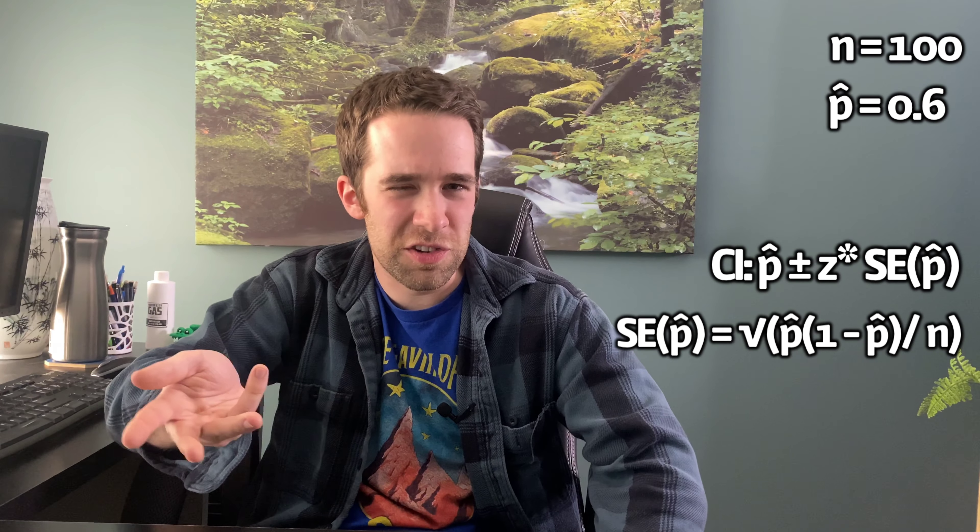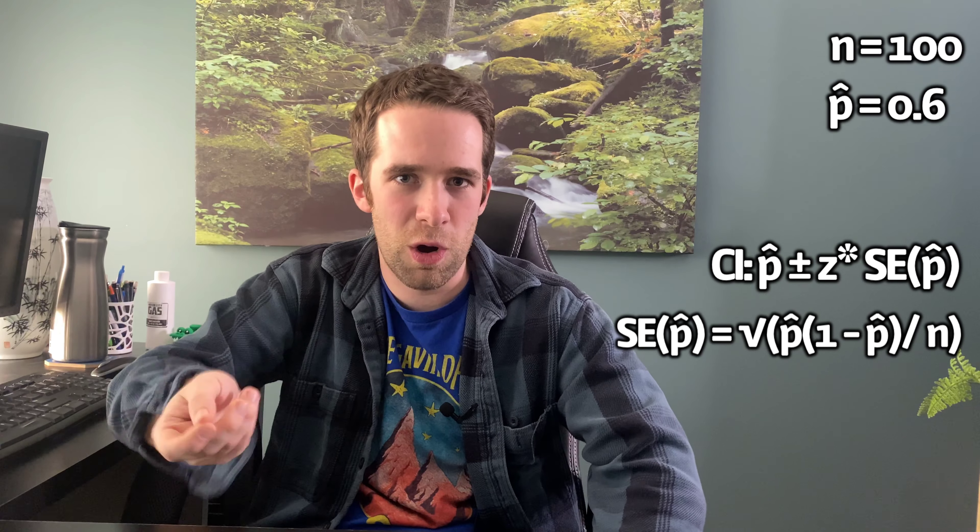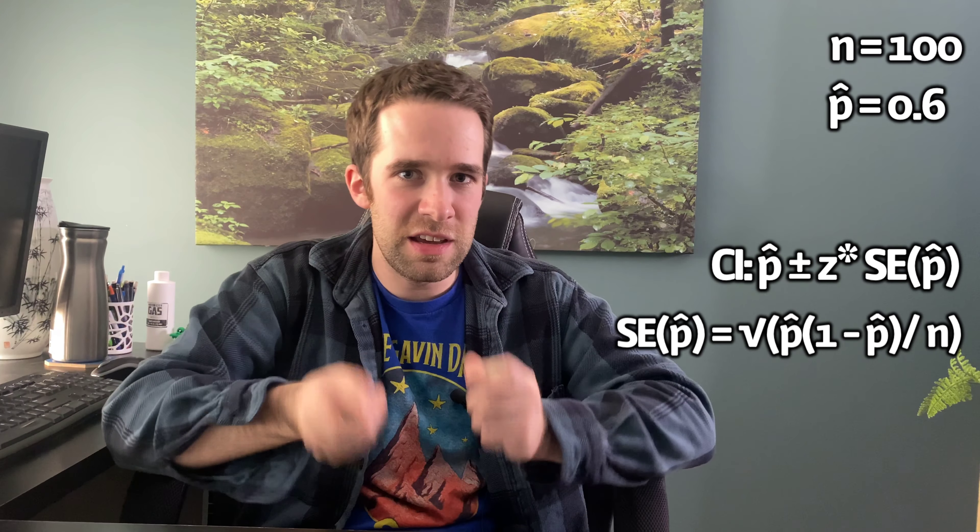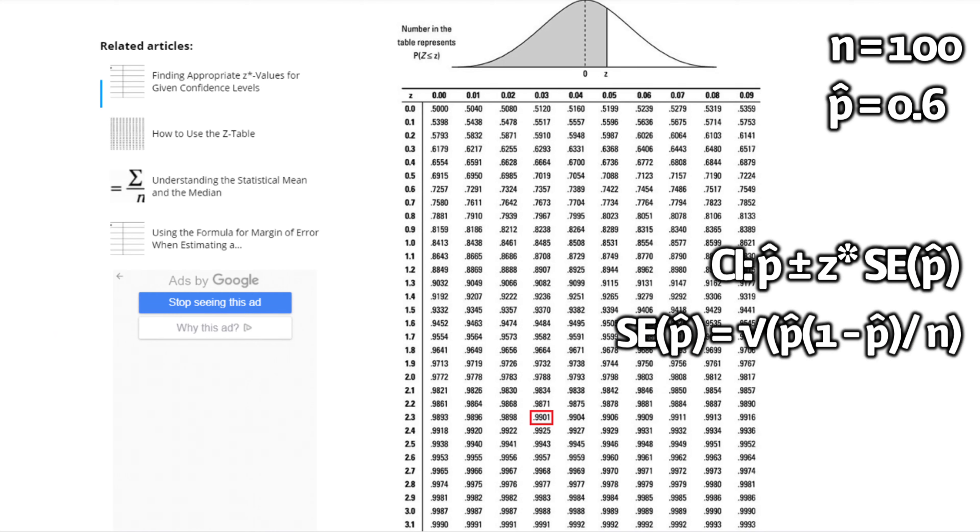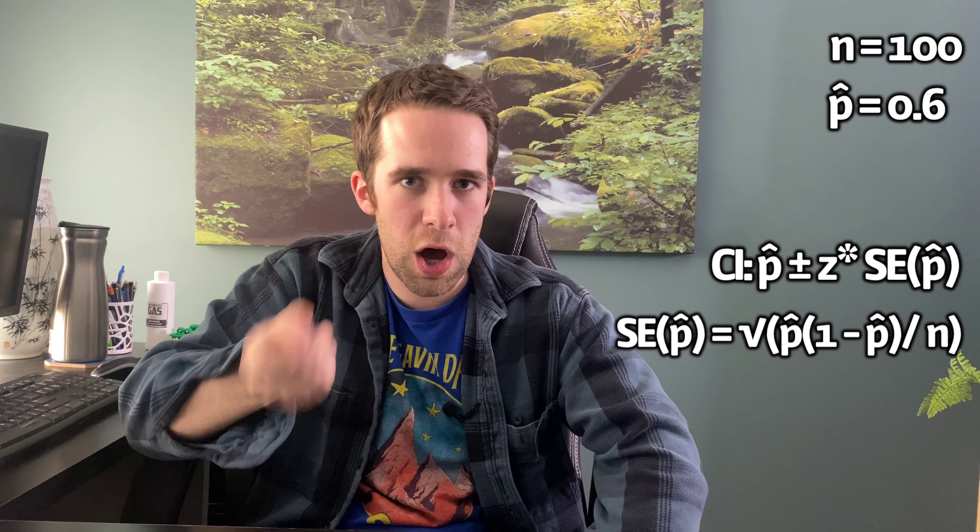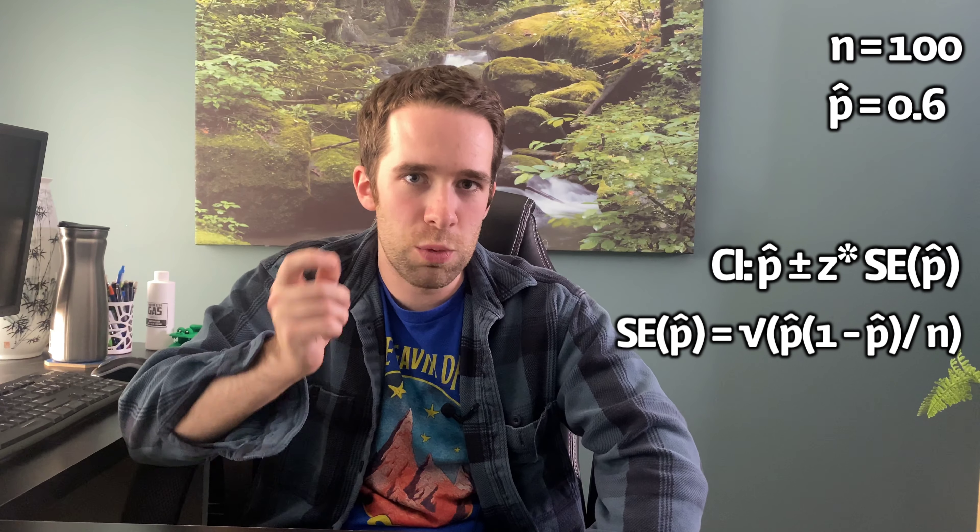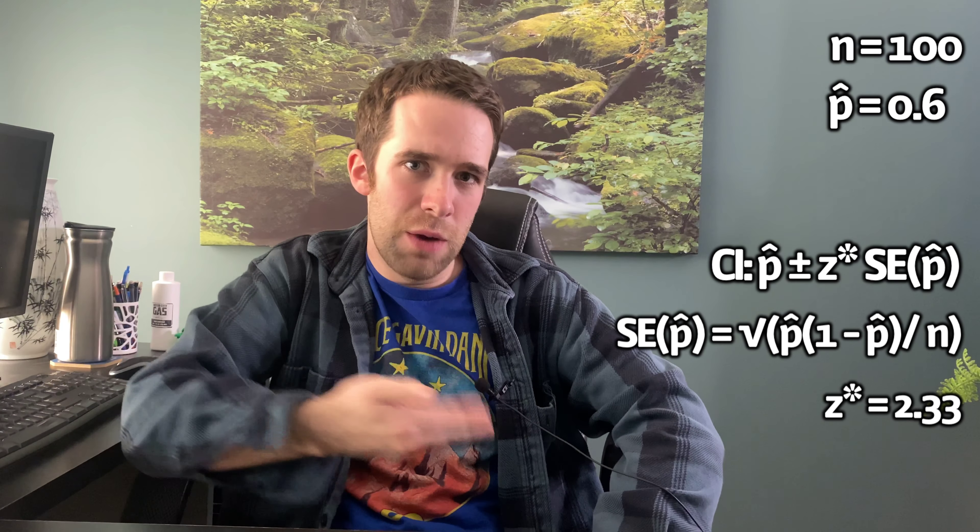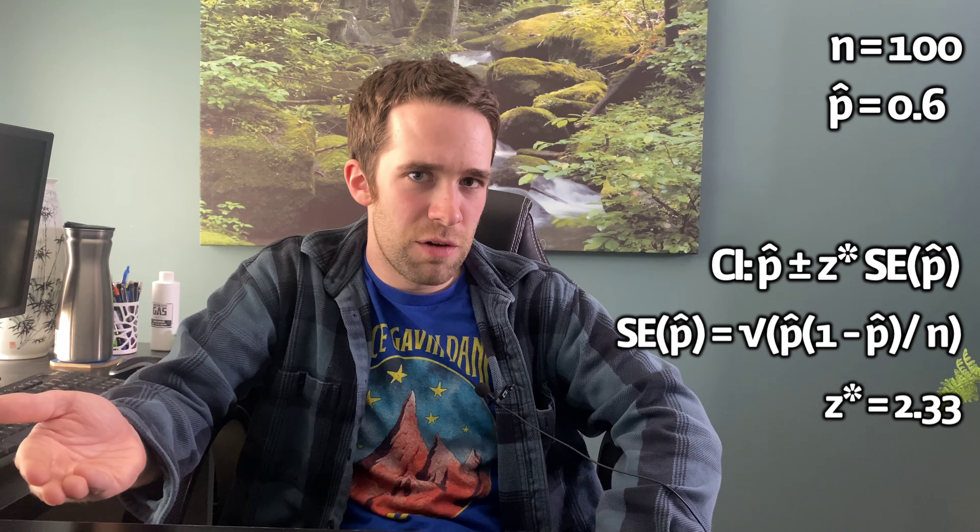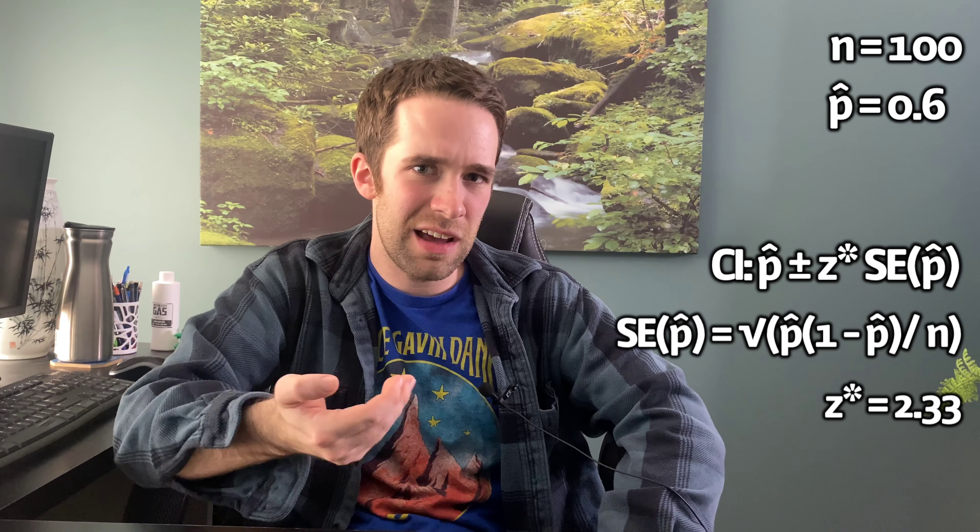You can use a lookup table, or you can use R or some statistical software to find Z-star, but we do need to find Z-star at the 99% confidence level. So, I'm going to use this freely available table. It's going to be linked to in the description, but when I look it up, I get Z-star equals 2.33. Now, we just plug numbers in, and we get a 99% confidence interval of 0.486 to 0.714.